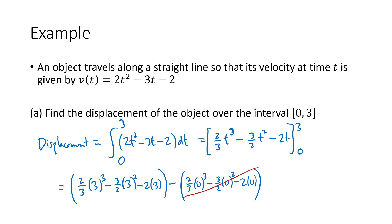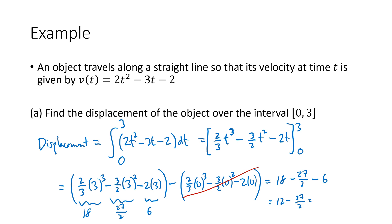Working out the first set of parentheses with t = 3: (2/3)(27) = 18, (3/2)(9) = 27/2, and 2(3) = 6. So we get 18 − 27/2 − 6 = 12 − 27/2 = 24/2 − 27/2 = −3/2. Negative displacement means that over the interval from 0 to 3, the object ended up 3/2 units further to the left than where it started.